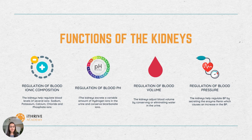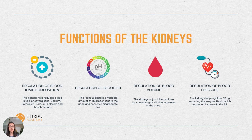Looking at the functions of the kidneys, the first and most important function is to regulate the blood ionic composition. The kidneys help regulate the blood levels of several ions — most importantly sodium ions, potassium ions, calcium, chloride, and phosphate ions.